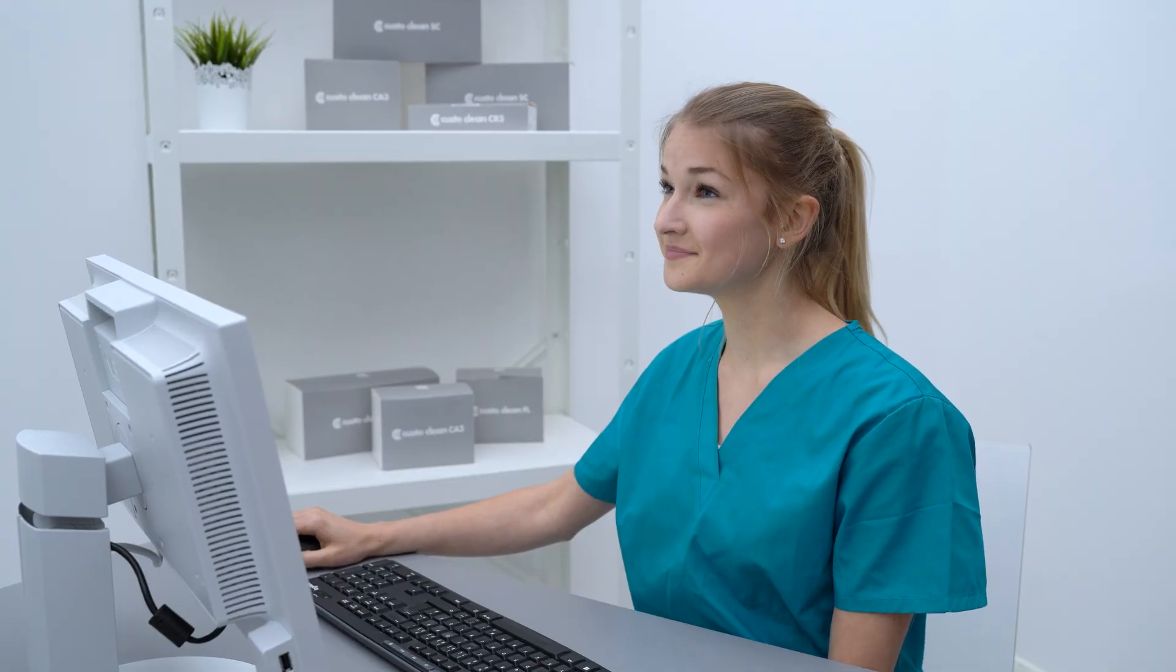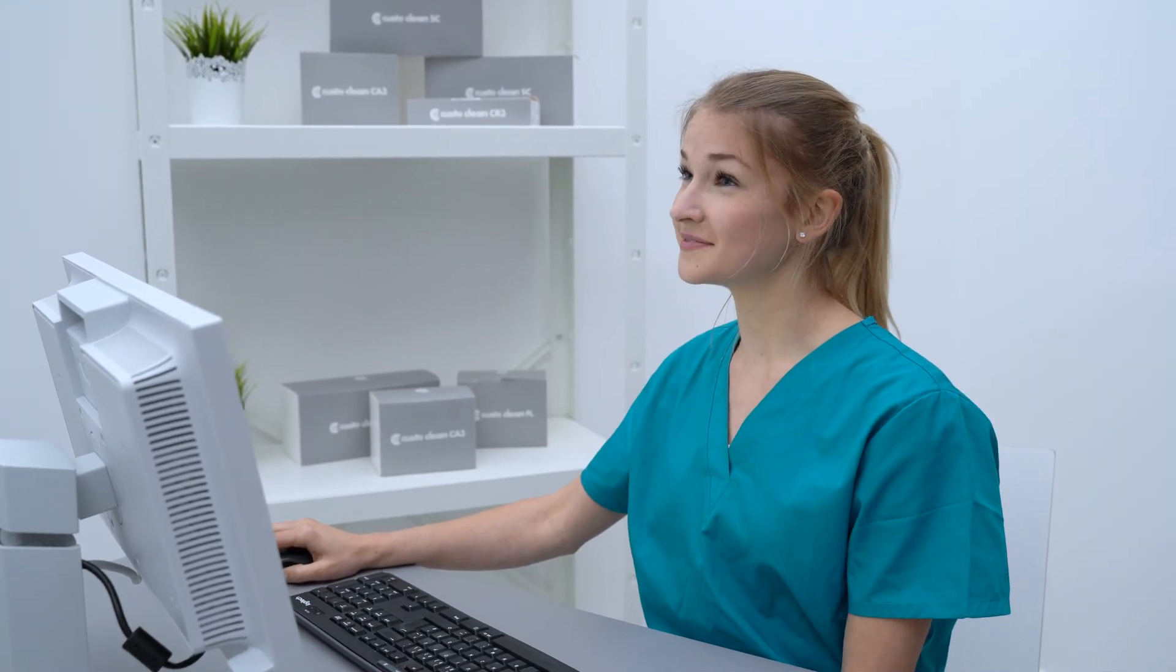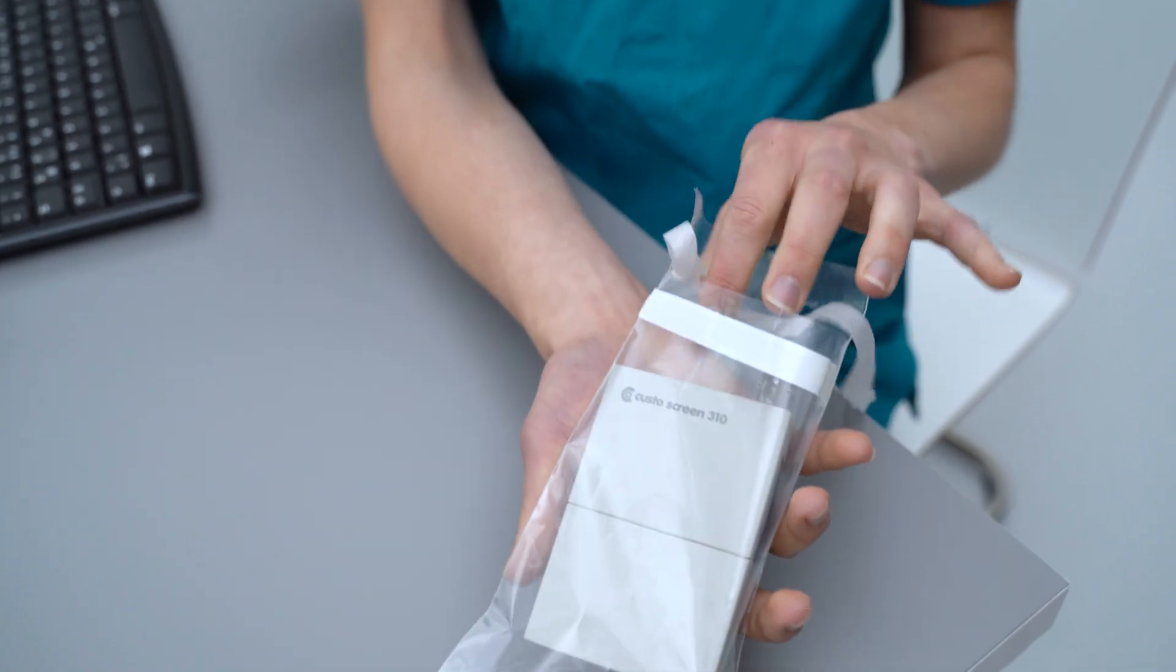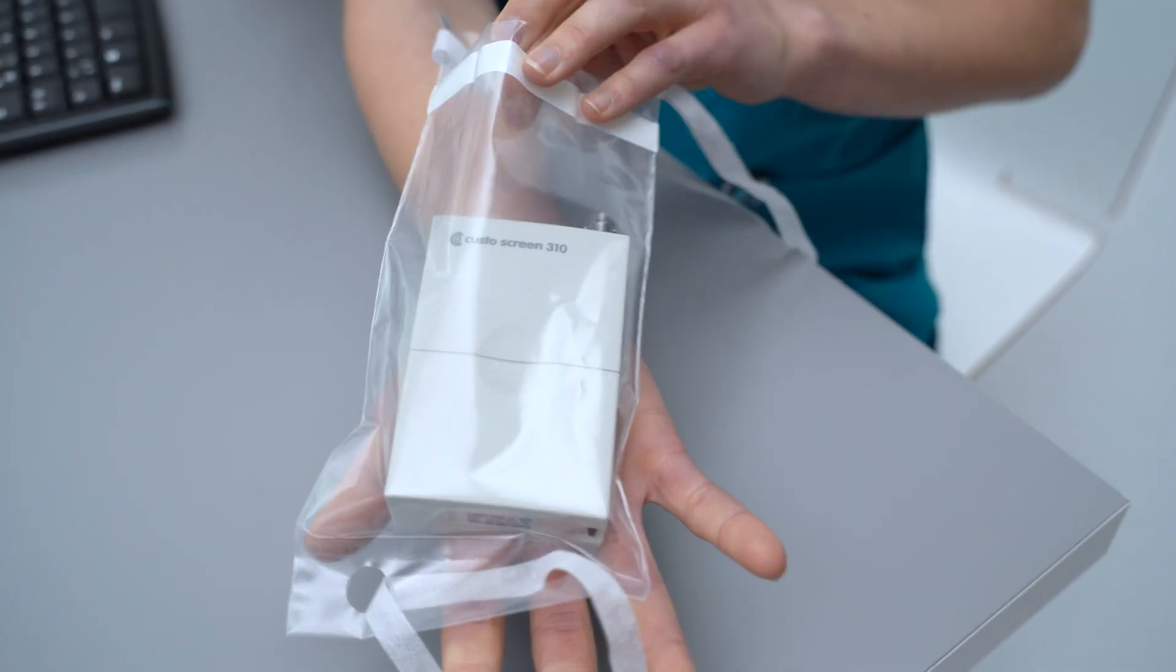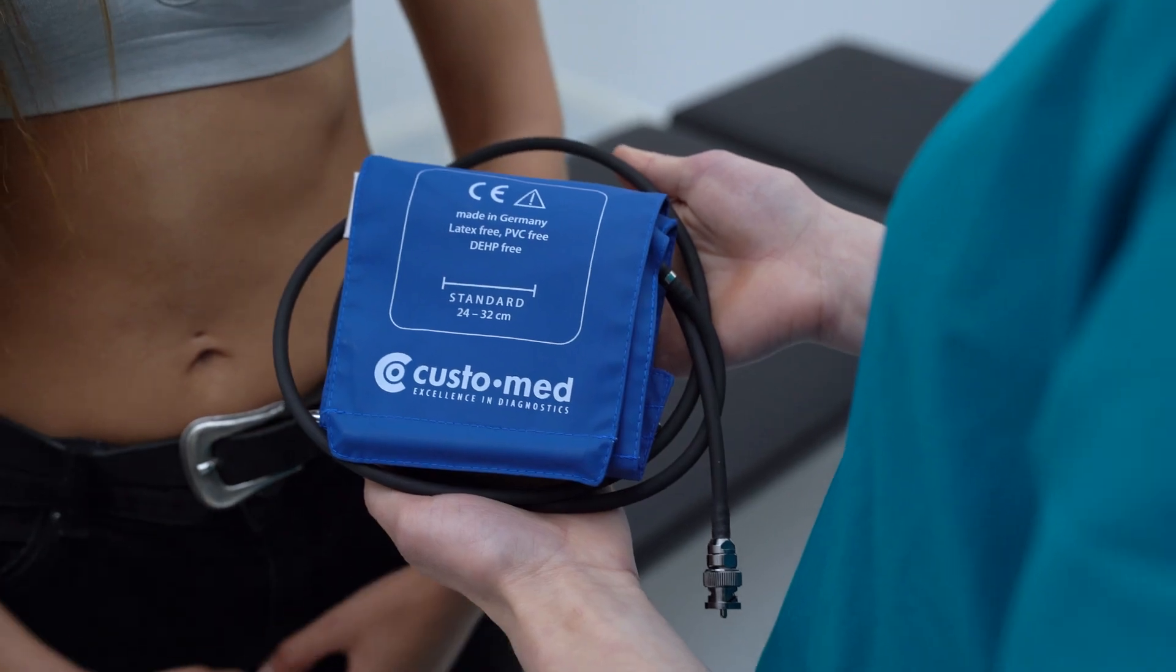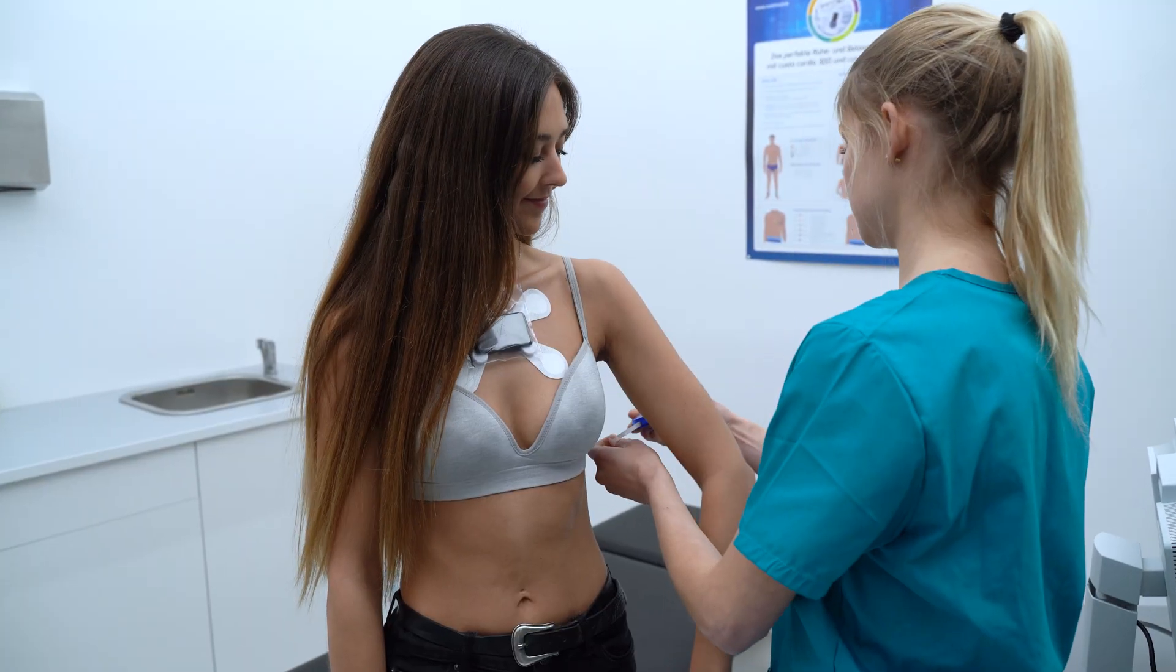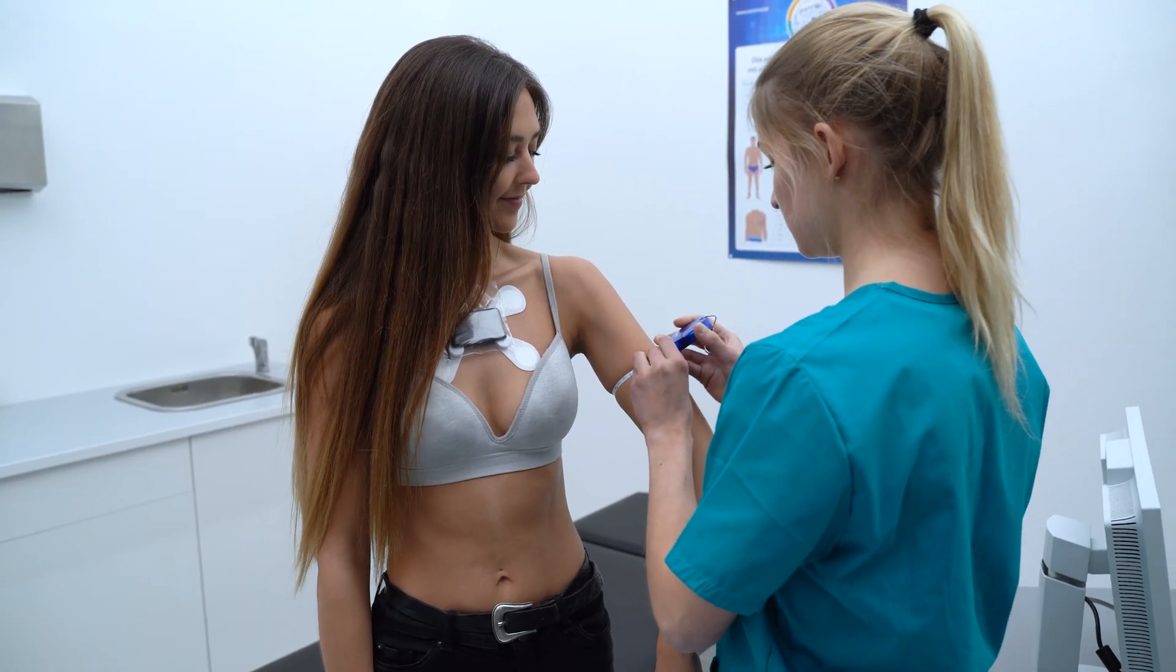As soon as the guard halter is placed on the patient, you can focus on the CustoScreen 310. Put this in a CustoClean Hygiene Bag for the long-term measurement. Then select a suitable blood pressure cuff. To do this, measure the patient's upper arm circumference.